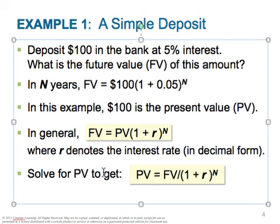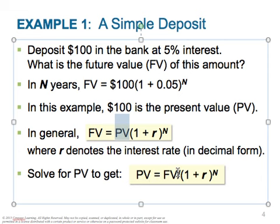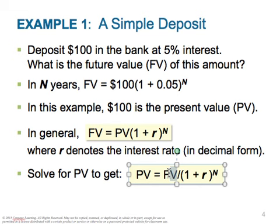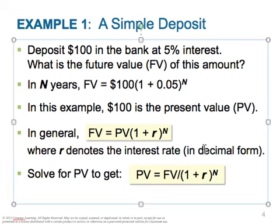We can solve for present value by rearranging the equation. Present value equals future value divided by (1 + R) raised to the power of N. So, if in 30 years you want to retire with a million dollars in the bank, you can enter a million as the future value, the prevailing interest rate, and N = 30, and solve for what you need to put in the bank now.